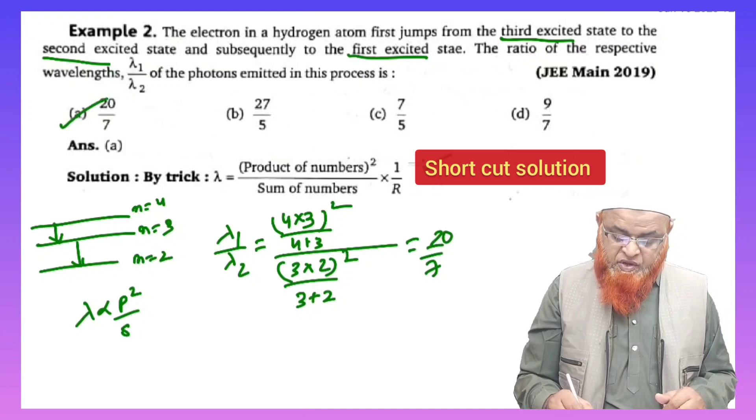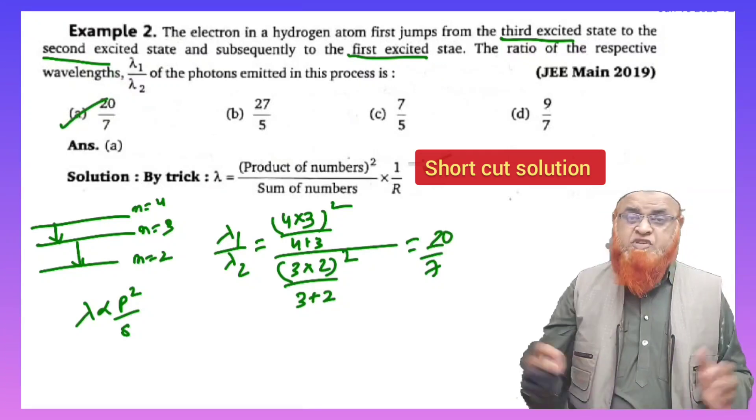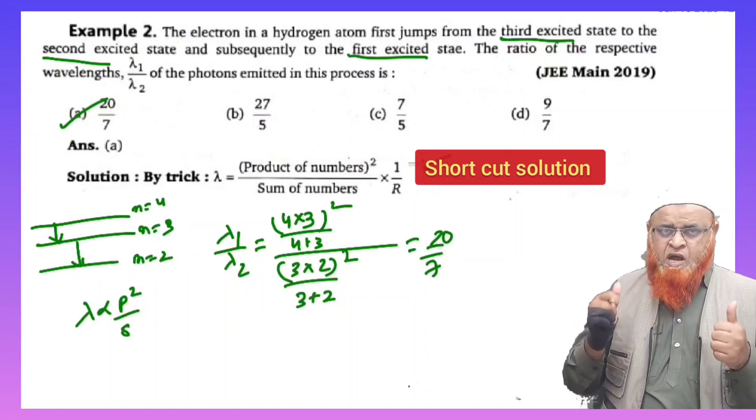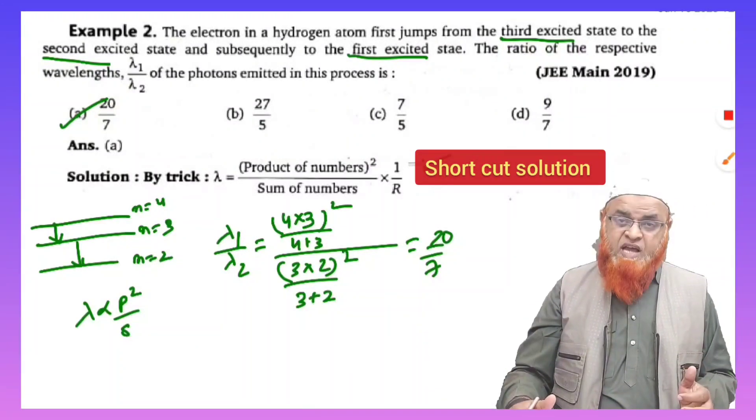So 20 by 7 is your answer, that is option A is the correct answer after calculations. Thank you very much, have a nice day, enjoy, all the best for your examination.